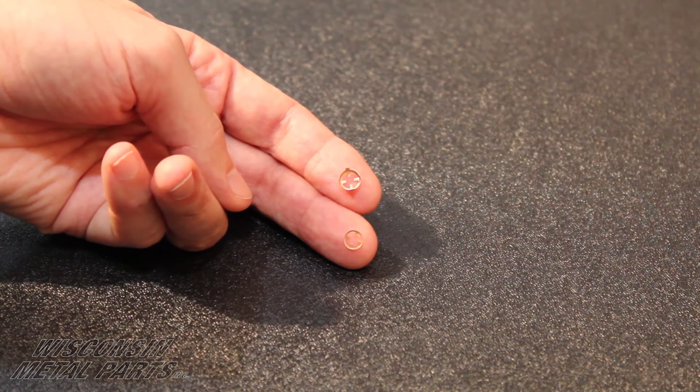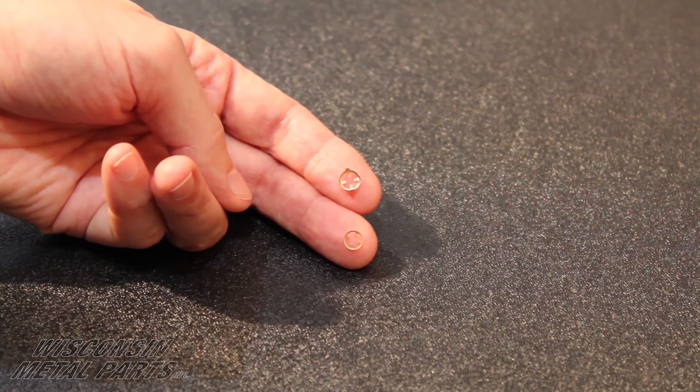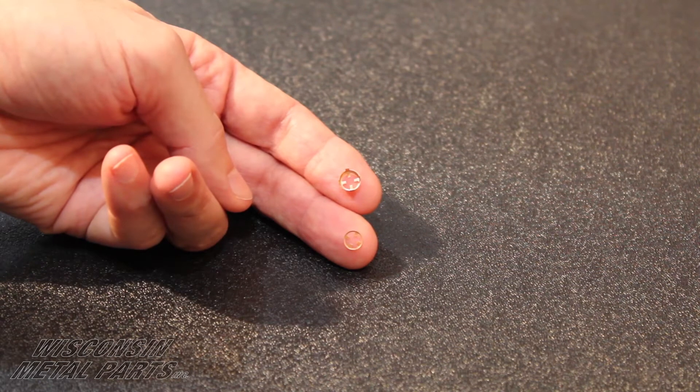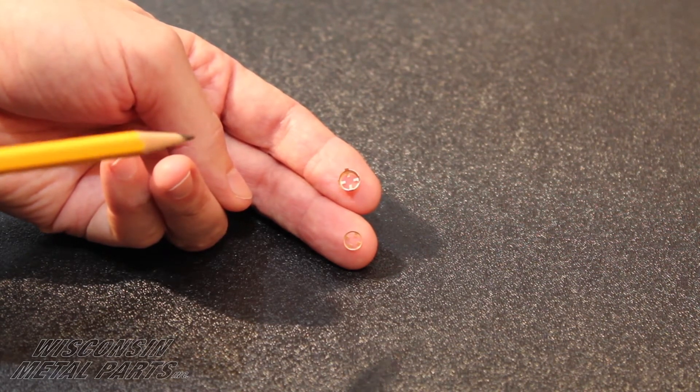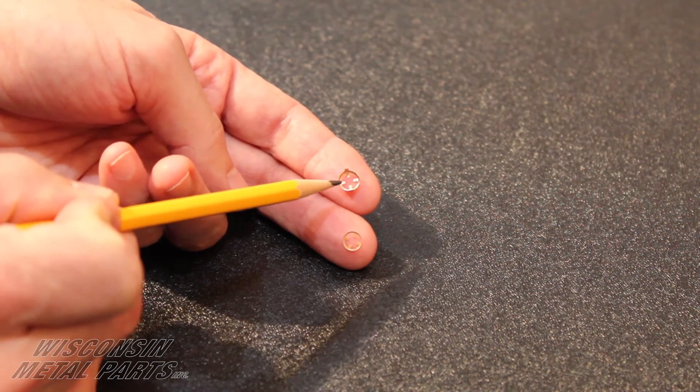These tiny parts are made out of copper and these are also run in a progressive stamping die with some draw work in them and legs that get formed up.